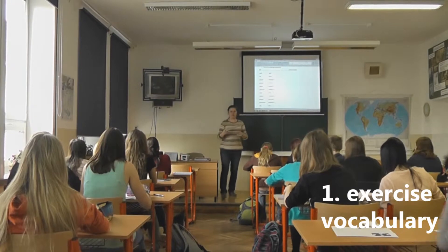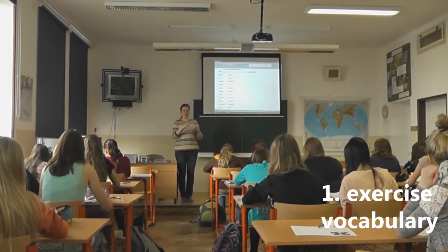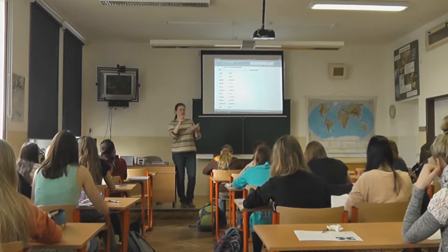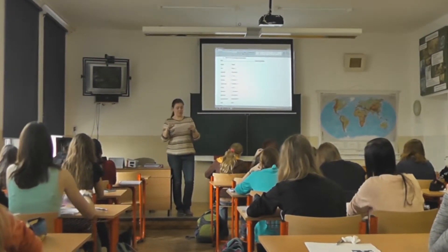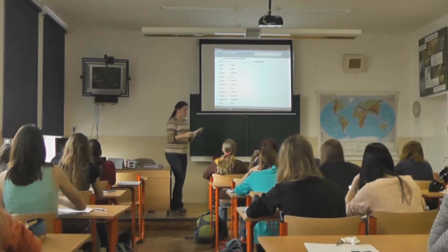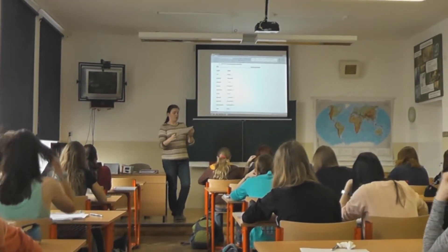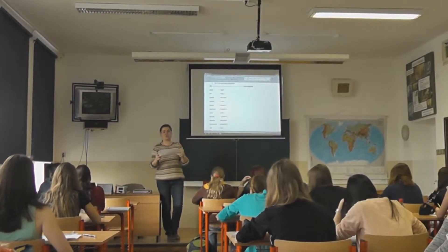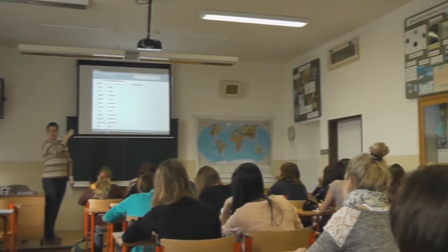I have prepared a worksheet for you. The worksheet is focused on physical geography, on equinox and solstice. We are going to discuss this topic right now. The first task, which you can see in this worksheet, includes a word list with pronunciation and I will tell you the Czech meanings for all of them.